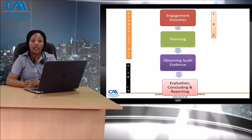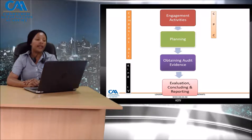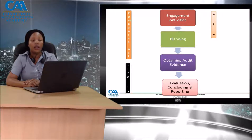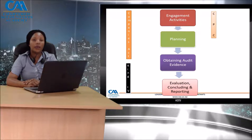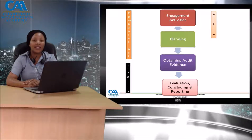Then we have the Code of Corporate Governance, which is the KING4 code, and for the purposes of your CTA we will also be taking you through the ZIM code. The Code of Corporate Governance stipulates how an entity is supposed to conduct itself — that is, how they are supposed to conduct their business in an ethical manner.